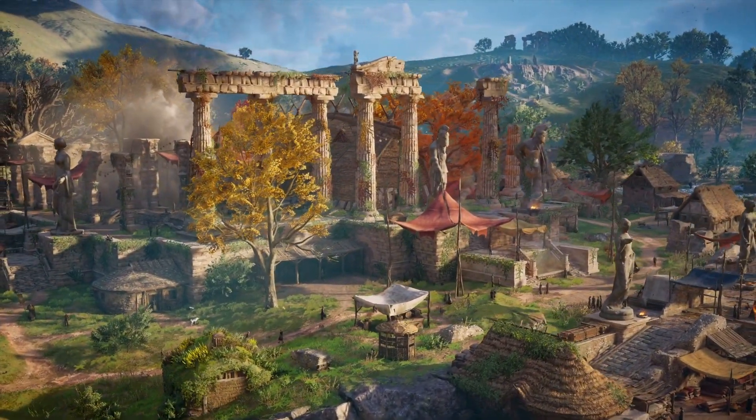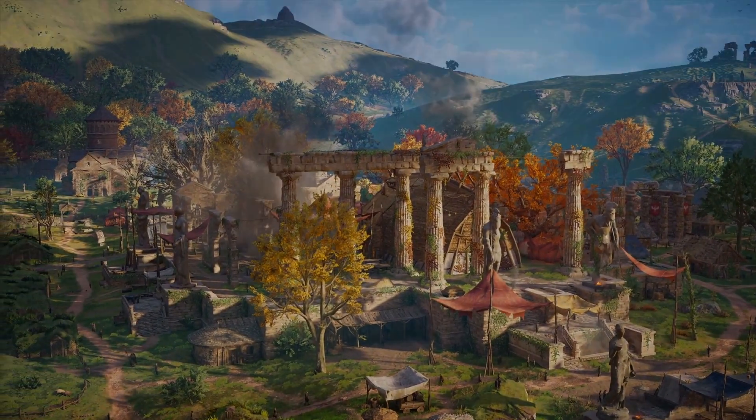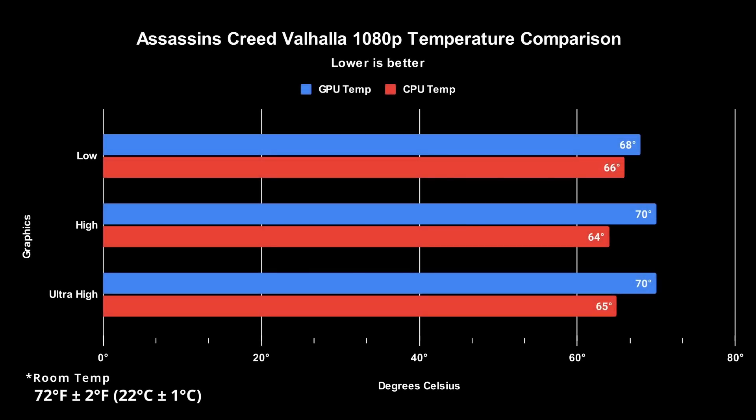Next, I tested Assassin's Creed Valhalla with its in-game benchmarking tool. Even though for the last two games I would pick the balanced or medium settings, for this game I would definitely pick ultra high. The 0.1% low is 28 FPS, so I'd be expecting pretty smooth gameplay at that setting. We again see temperatures rise as we increase the graphics settings, though the difference is small enough that I'm chalking it up to margin of error.